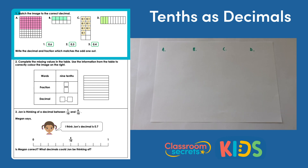Question one: match the image to the correct decimal. We have four images, three options for our decimals, and we have to write the decimal and the fraction which matches the odd one out. The way I'm going to do this is have a look at each of the images, write down the decimal they represent, and then see which of my options match up with which.